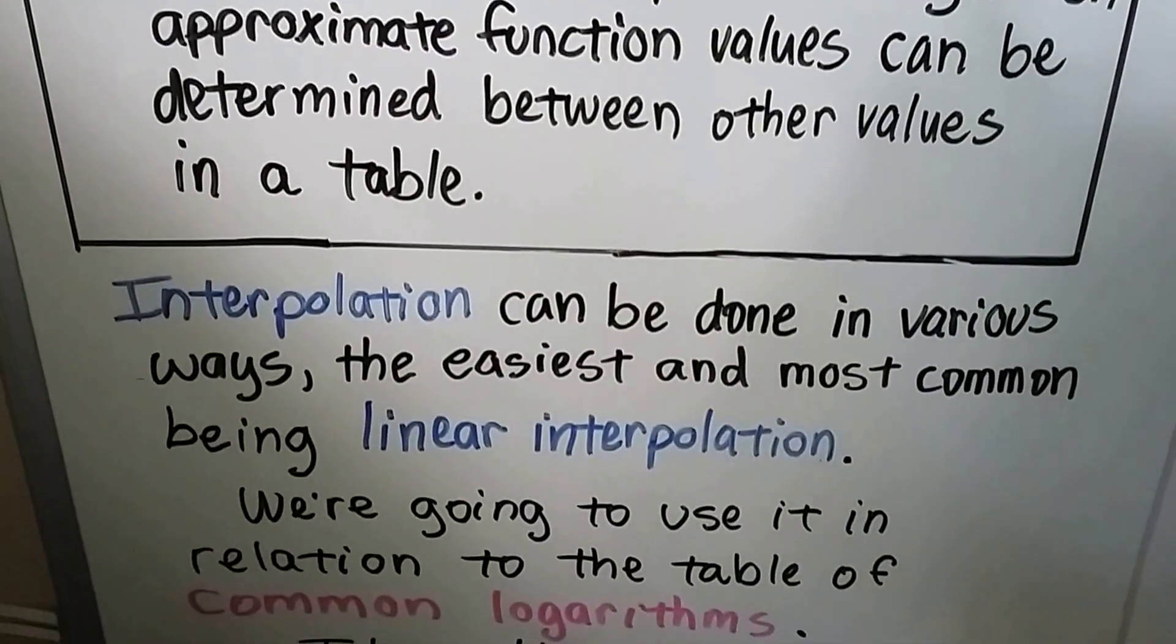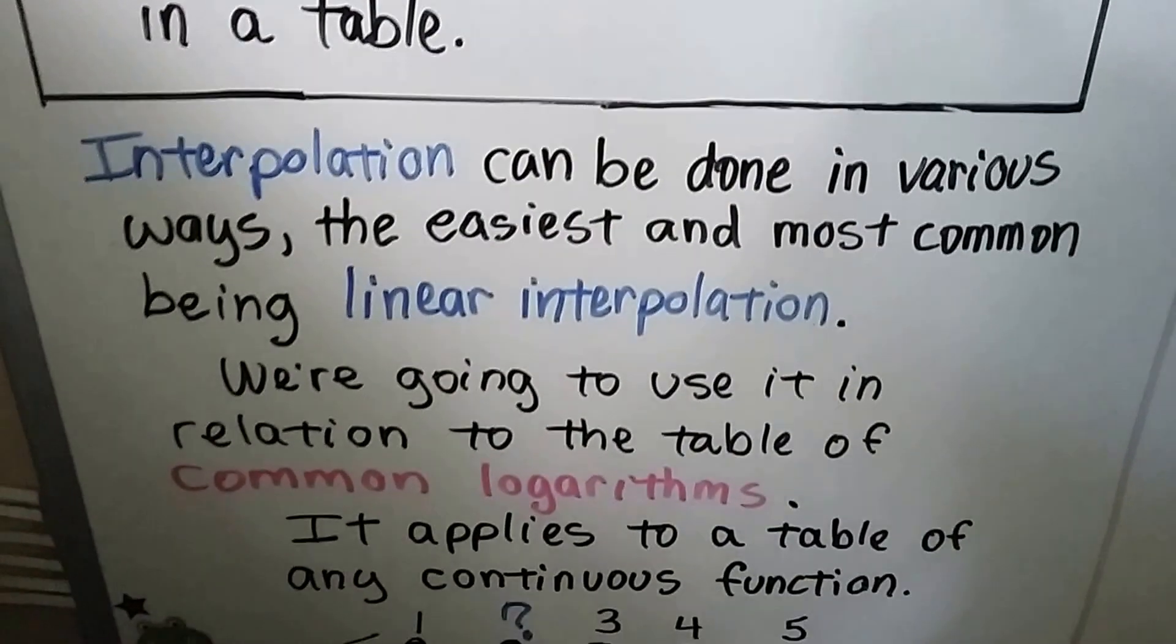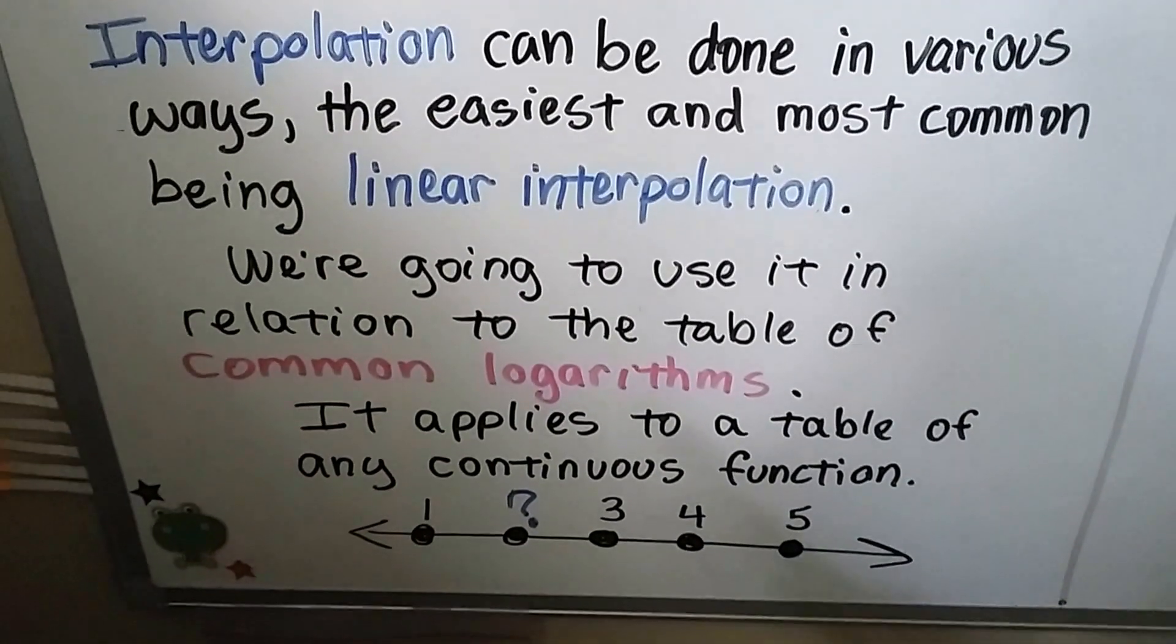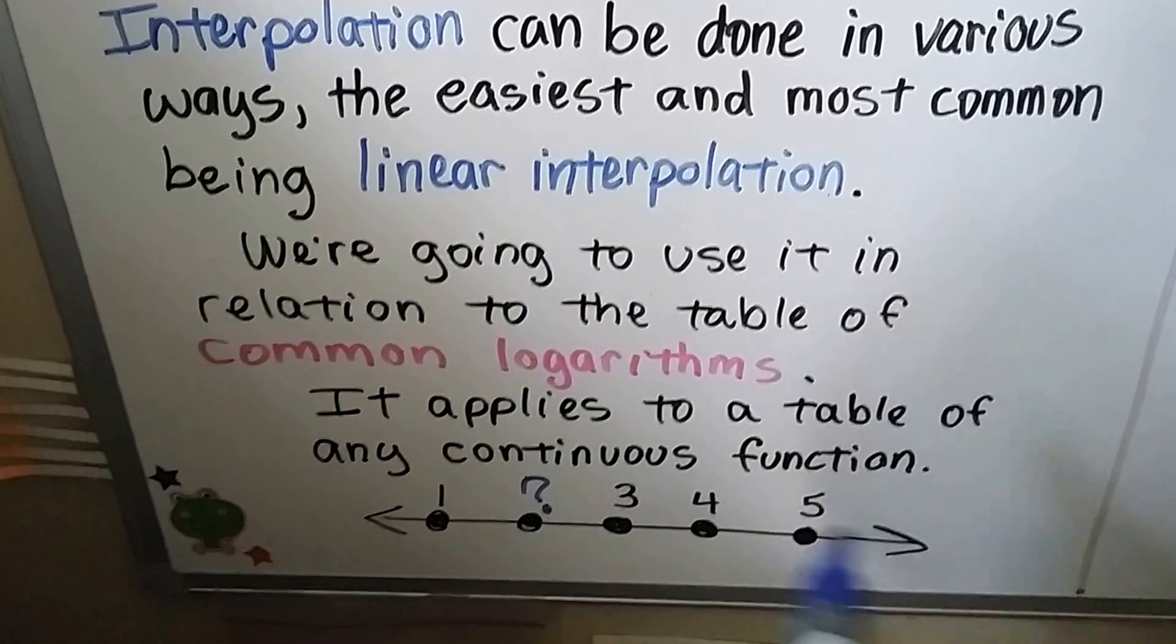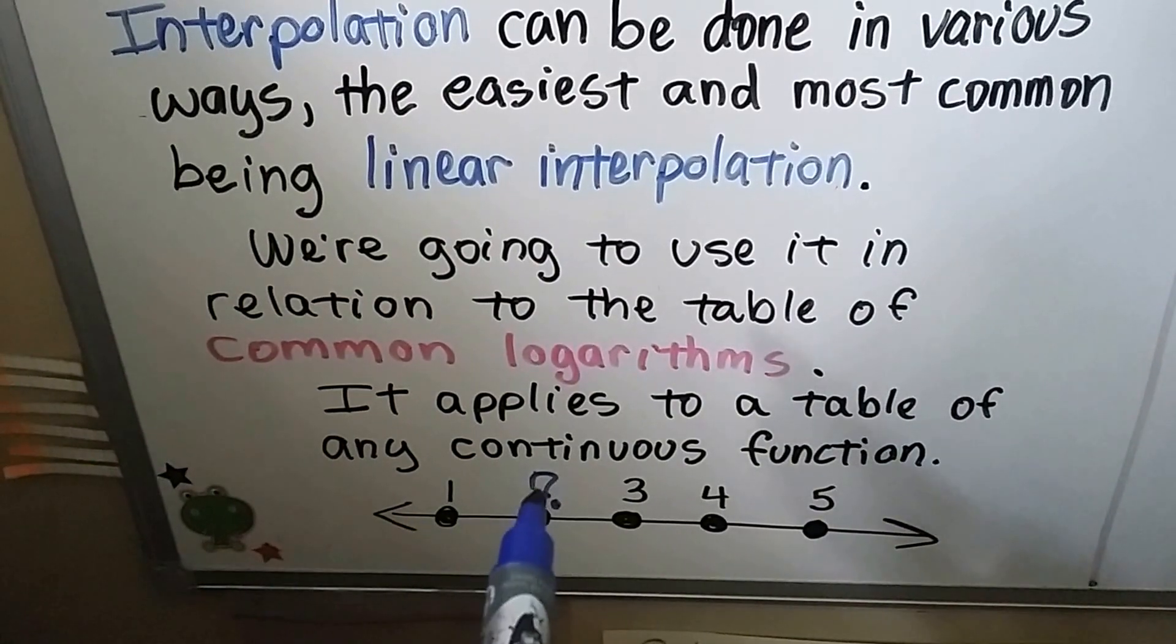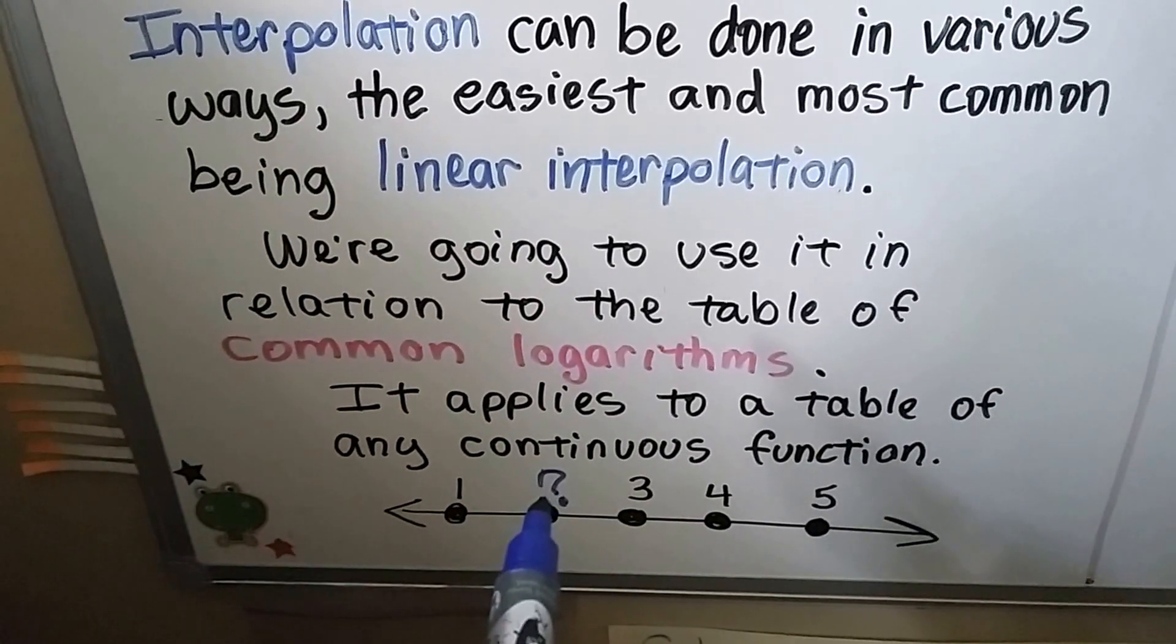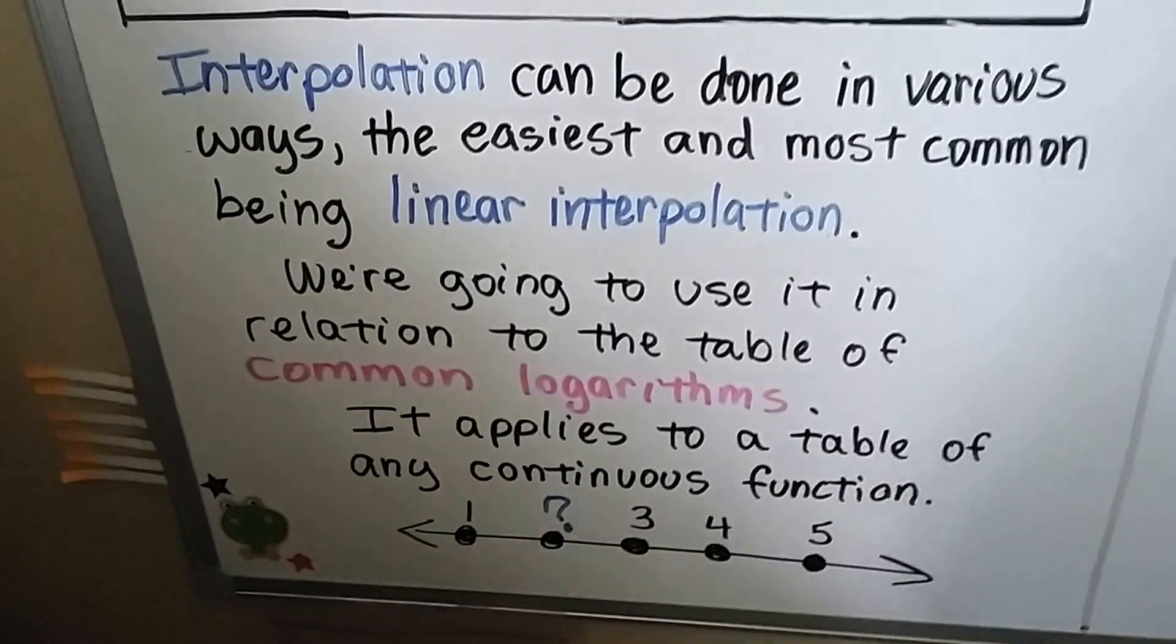Interpolation is a process by which approximate function values can be determined between other values in a table. Interpolation can be done in various ways, the easiest and most common being linear interpolation. It applies to a table of any continuous function. If you saw 1 and then a missing value, and then 3, 4, 5, we can tell this is in between 1 and 3, and using linear interpolation we can decide that's a 2. It's easy because it's a straight line.